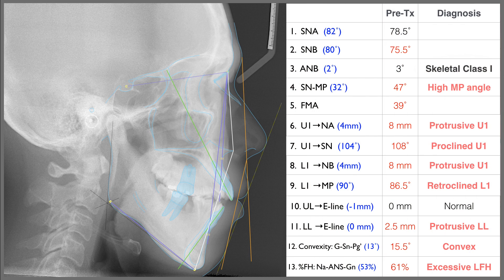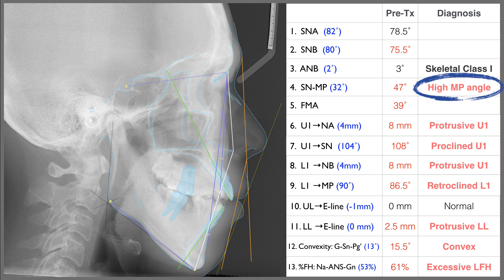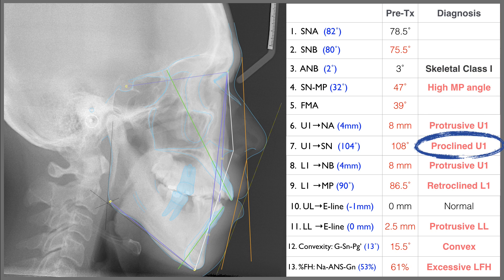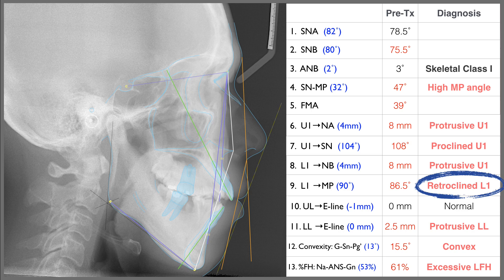According to the cephalometric analysis, this patient was skeletal class 1, high mandibular angle, proclined upper incisor, and retroclined lower incisor. The lower facial height was excessive.